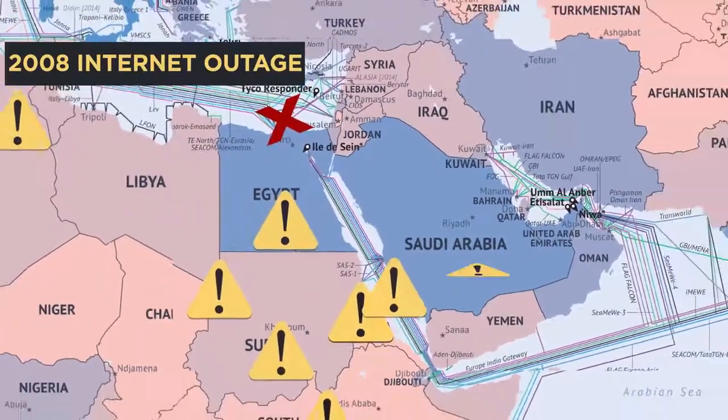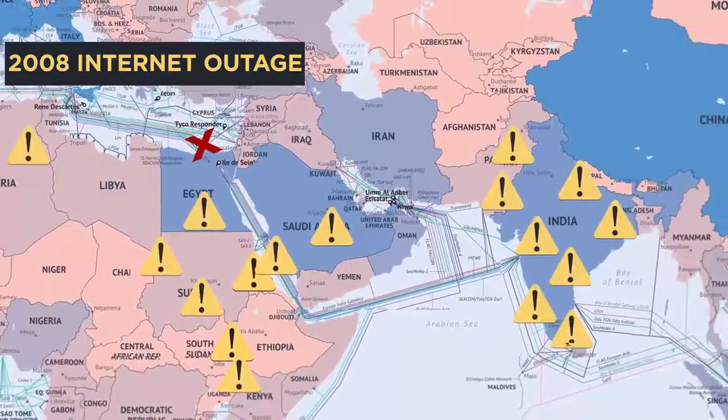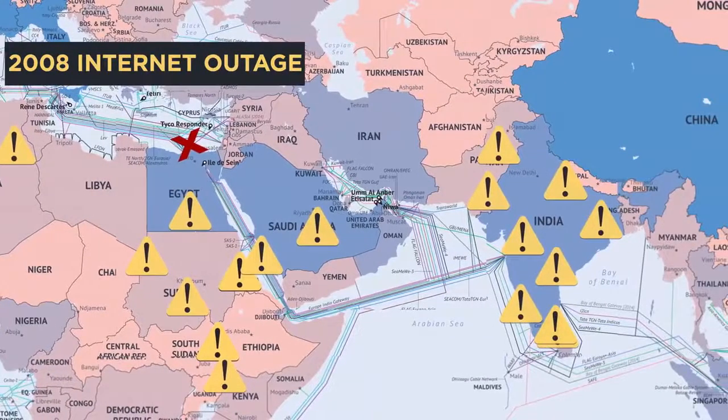In 2008, there was a cable that was actually cut near Alexandria, Egypt, which really interrupted the internet for most of the Middle East and India. So we take this internet thing for granted, but it's really a pretty fragile physical system.